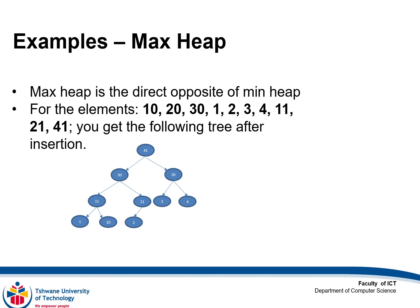If you were to consider a max heap for the elements 10, 20, 30, 1, 2, 3, 4, 11, 21, and 41, the tree you'll come up with is the opposite of the min heap — the bigger elements are at the top.